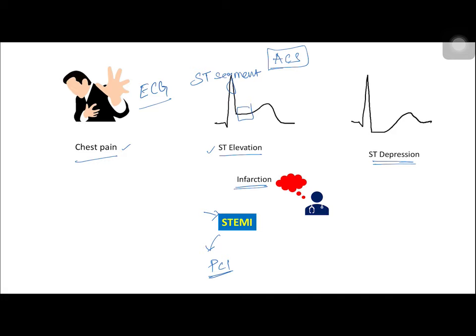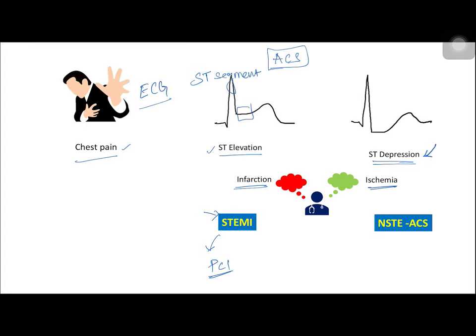But if a person with chest pain has ST segment depression, the physician thinks of ischemia rather than infarction. This is due to decreased blood supply, causing unstable angina. The patient is then labeled as NSTE acute coronary syndrome — non-ST segment elevation acute coronary syndrome.